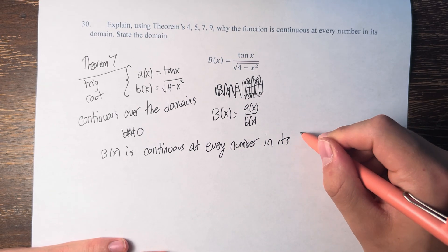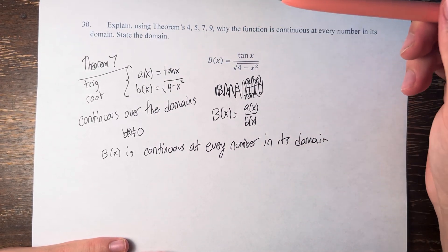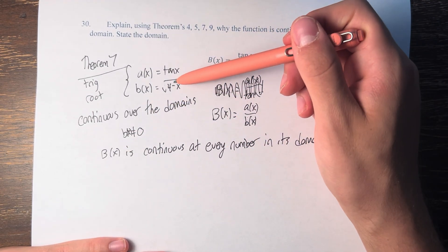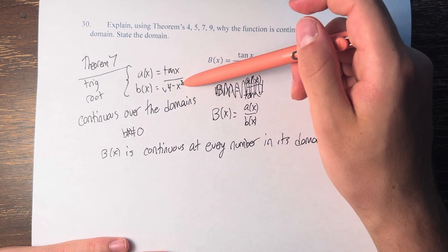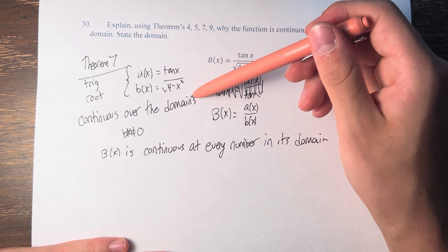So what is the domain? Well, again, we have that the denominator cannot equal 0, and we also have that it can't be less than 0, because that would be taking the square root of a negative number.